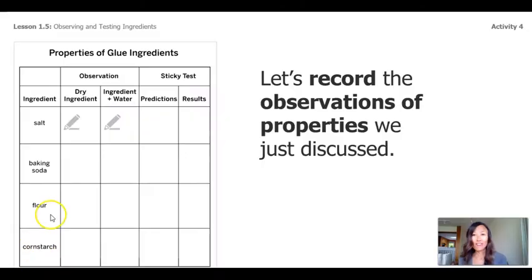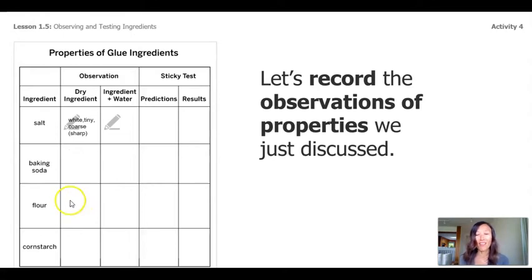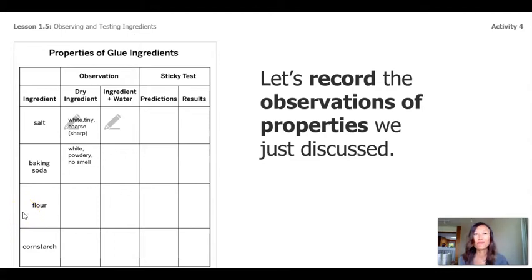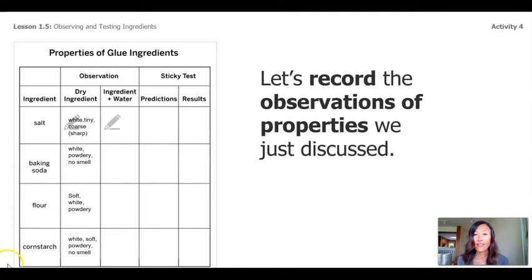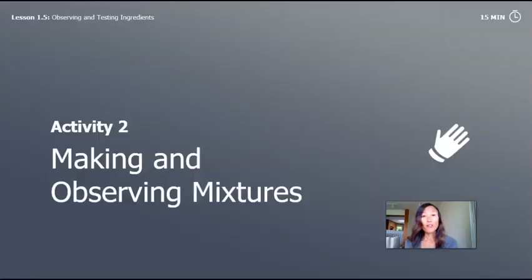Let's record the observations of properties we just discussed. The first ingredient was salt — I bet you said white, tiny, coarse, which also means sharp. The second ingredient was baking soda — did you say white, powdery, and no smell? Me too. Let's go to flour: I thought soft, white, powdery. And cornstarch: white, soft, powdery, and definitely no smell.